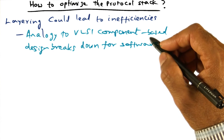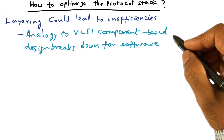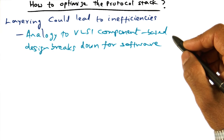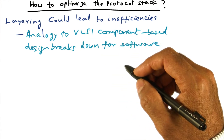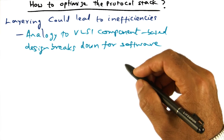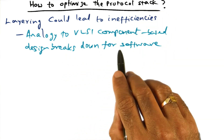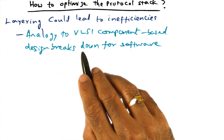This is where the analogy to VLSI component-based design breaks down. In VLSI component-based design, even though we are building a complex chip like a CPU by putting together components, the components just fit together very nicely — there is no inefficiency in going between them. But in software components, unfortunately, they have interfaces, and interfaces mean well-defined boundaries between components. To cross the component boundary, you may have to copy parameters and adhere to interface specifications, all of which leads to inefficiencies.